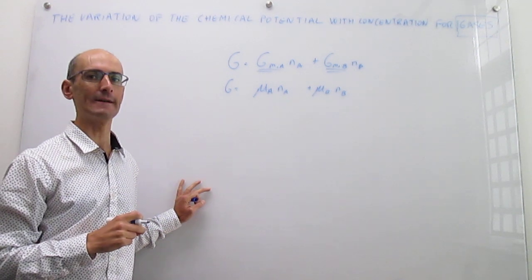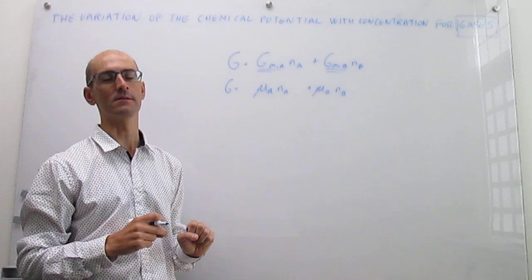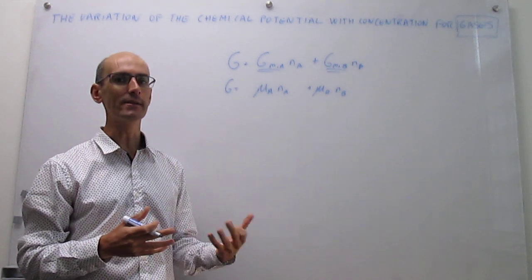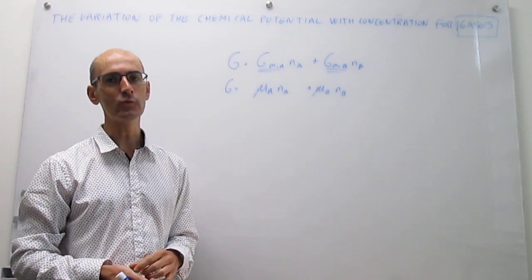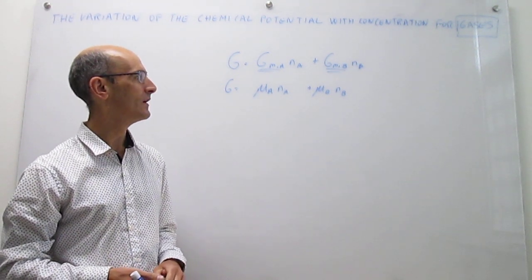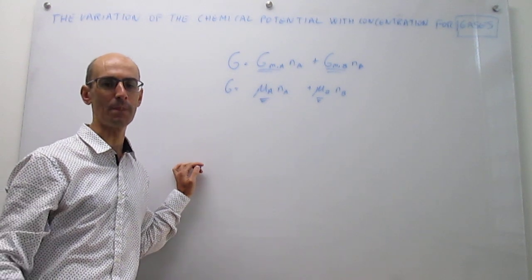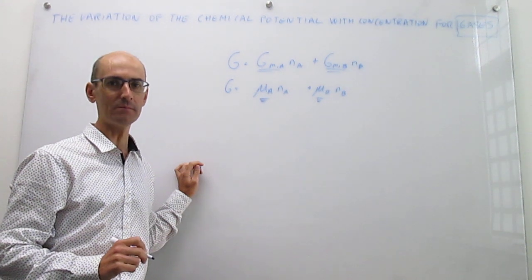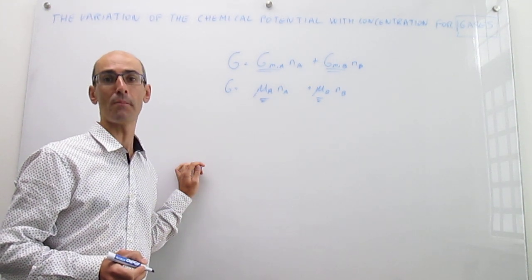Something that we have seen in a prior video is that these partial molar quantities — these chemical potentials — depend on the concentration, so they vary with concentration. The question is whether we can use thermodynamics to find an analytic expression for that variation of the chemical potential with concentration. We are going to start with the simplest possible case, which is ideal gases. The question is to figure out how the molar Gibbs energy of a gas changes with concentration. Remember that concentration in gases can be conveniently expressed in terms of partial pressures.